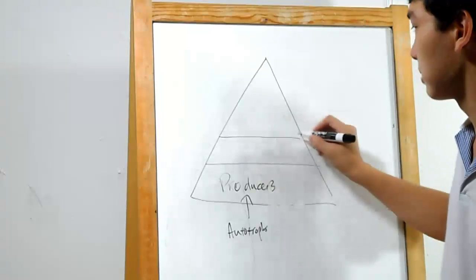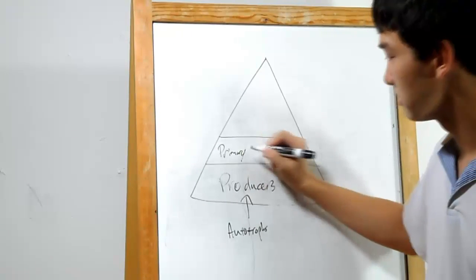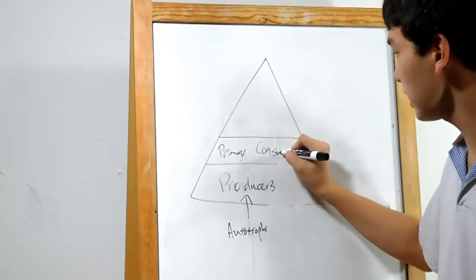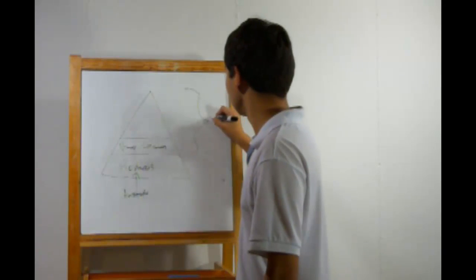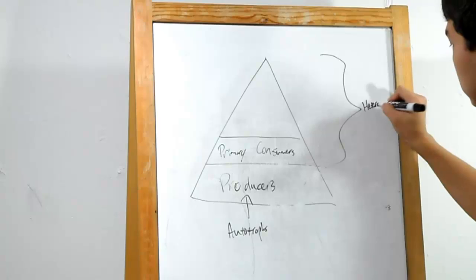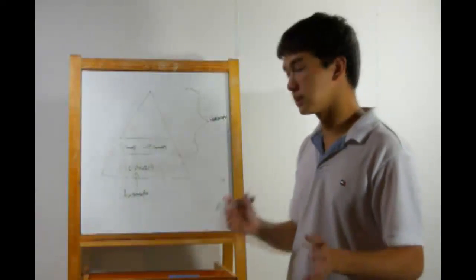Let's move up the pyramid. We have the primary consumers. The primary consumers do not make their own food. They are heterotrophs. Anything above the producers, they're heterotrophs.